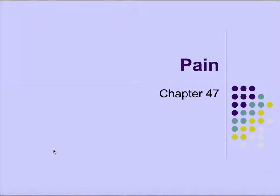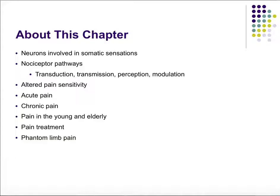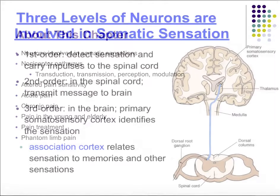Chapter 47: Pain. In this chapter we'll talk about the neurons involved in normal somatic sensations. We'll discuss nociceptor pathways including transduction, transmission, perception, and modulation of pain. We'll discuss altered pain sensitivity as well as acute and chronic pain. We'll look at pain in the young and the elderly, treatments to pain, and then we'll end with phantom limb pain.